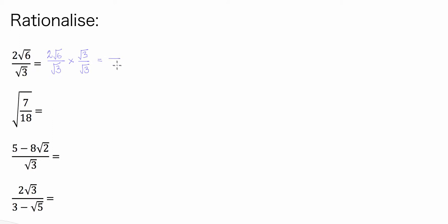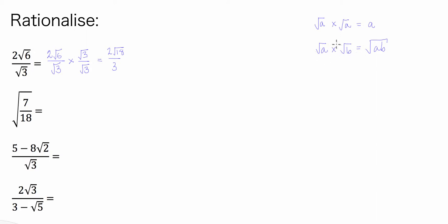That comes from the surd law: if we have √a multiplied by √a, that just equals a. So what we have now is 2√6 times √3, and that's going to give us 2√18. That is the index law: if we have √a times √b, that's equal to √(ab). So if you've got two square roots times by each other, you can just multiply the numbers under the square root sign. So 6 times 3 is 18, giving us 2√18 on the numerator.